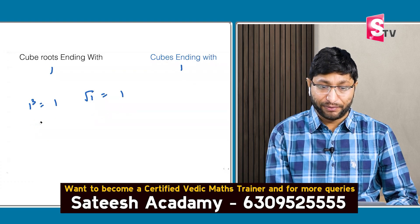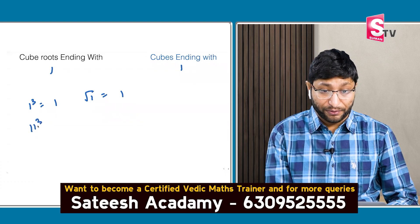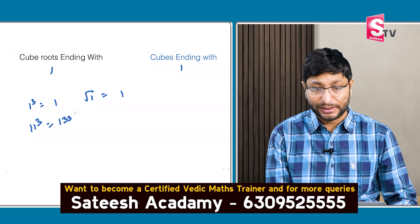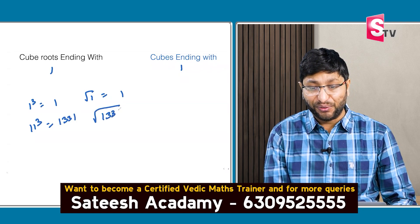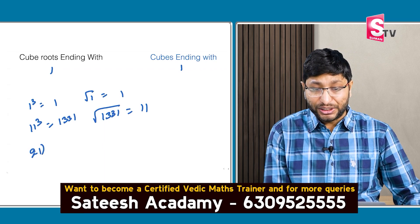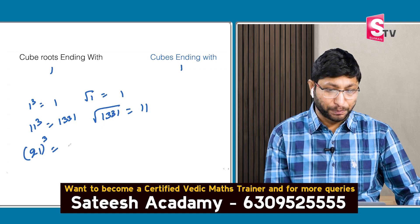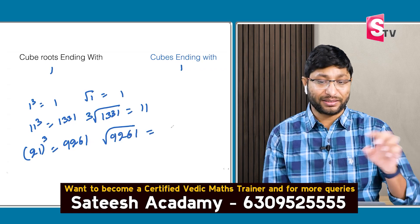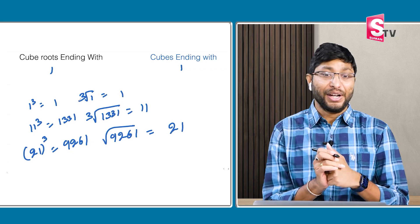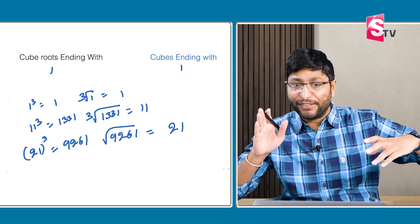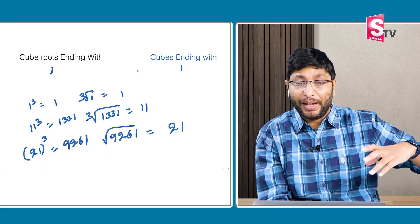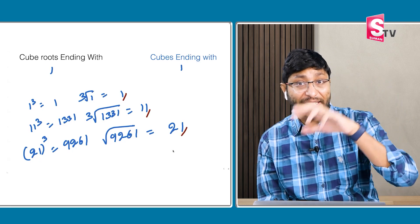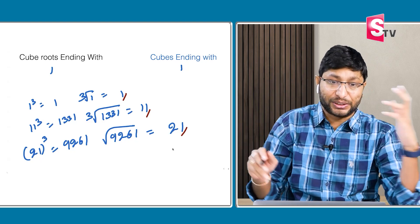For example, 11 cube is 1331, so the cube root of 1331 is 11. And 21 cube is 9261, so the cube root of 9261 is 21. If you observe: when the cube root is ending with 1, the cube is also ending with 1. So cube root ending with 1 corresponds to cube ending with 1.